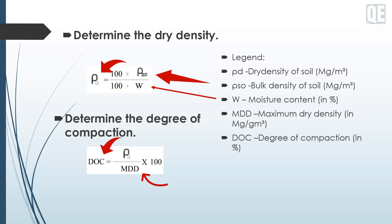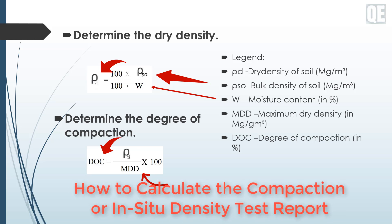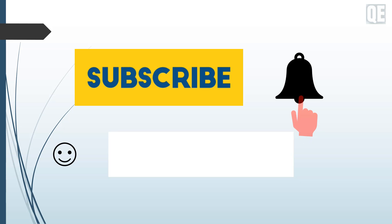That's it. I'm hoping that the above has helped quality engineers or civil engineers to better understand how the density test using the sand replacement method is done. Please watch out for our next video on how to calculate the compaction or in-situ density test report. Don't forget to subscribe and click the bell icon so that you won't miss our new videos. Thank you.